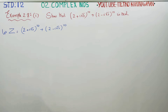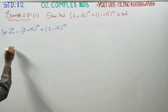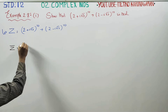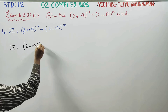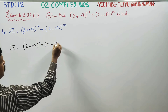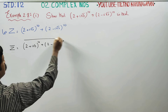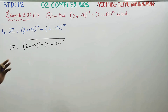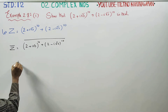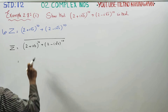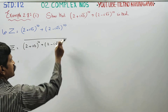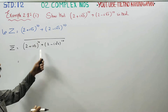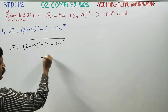I am finding z̄, the conjugate of z. In complex numbers, the conjugate of a sum will be the full conjugate. The conjugate property states that the conjugate of an addition equals the addition of the conjugates.